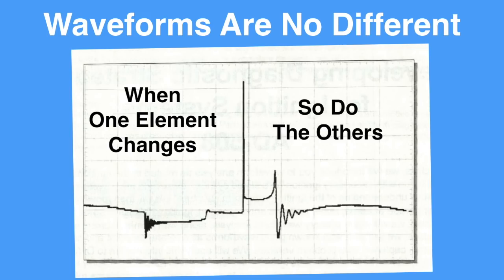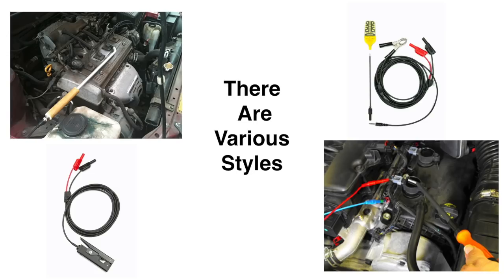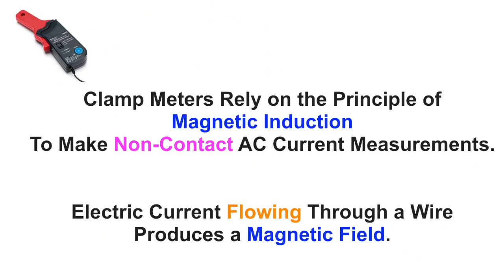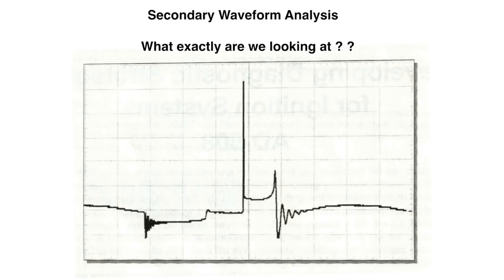To get this waveform we use a magnetic induction probe. There are various styles of induction probes. Clamp meters rely on the principle of magnetic induction to make non-contact AC current measurements. Electric current flowing through a wire produces a magnetic field.